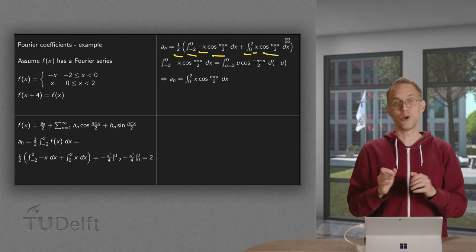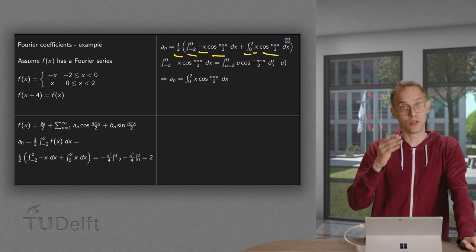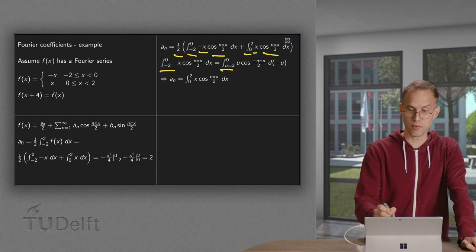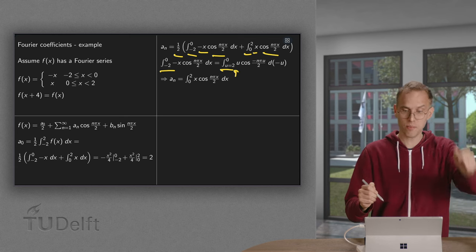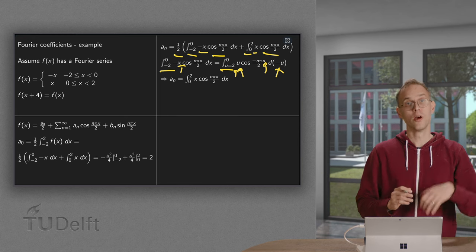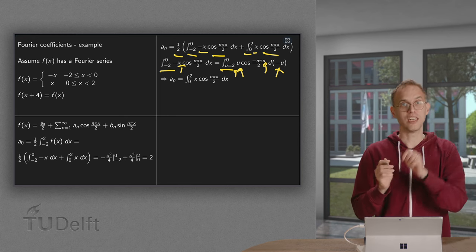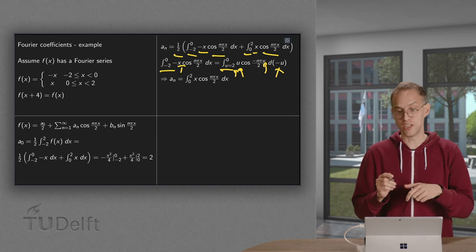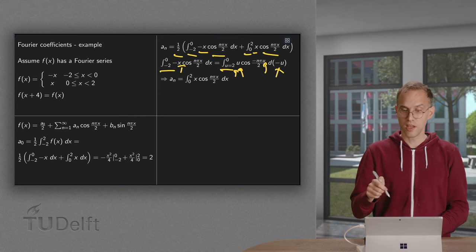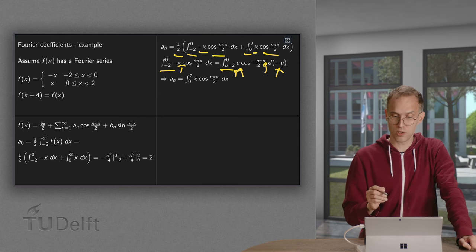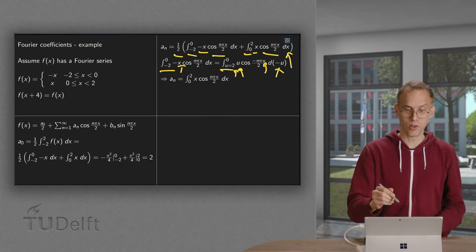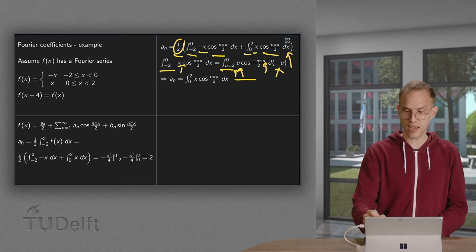Now we can rewrite the first integral because it's actually equal to the second one by making the substitution u equals minus x. So then u runs from 2 to 0. The minus x becomes a u, the x becomes a minus u, and the dx becomes a d minus u. The cosine of minus something equals the cosine, so the minus sign inside the cosine disappears. The d minus u becomes a minus du, which we use to flip the boundaries. So we get the integral from 0 to 2, u cosine n pi u over 2 du, which is exactly the same as the second integral. So actually the an are twice the second integral. This twice nicely cancels out with the half.